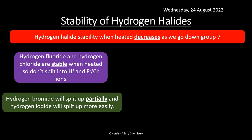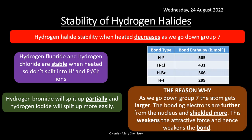The bond between hydrogen and iodine is relatively weak due to shielding. As we go down group 7, the atom gets larger, the bonding electrons are much further away from the nucleus and are shielded more. The attraction between the shared pair of electrons that forms the bond and the nucleus is weakened by the shells in between, making the bond weaker and more likely to break.